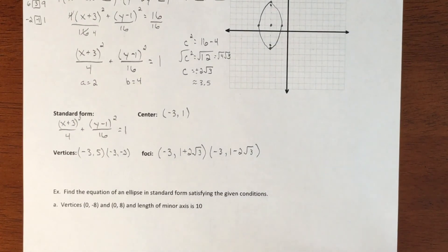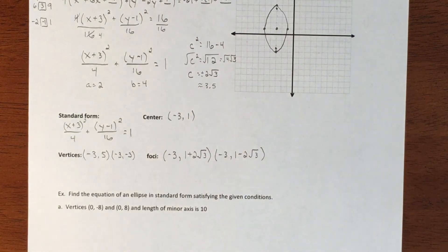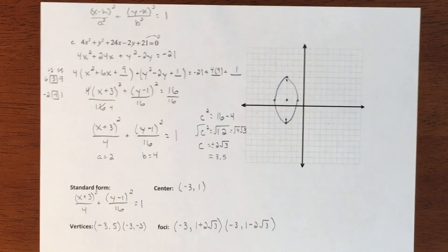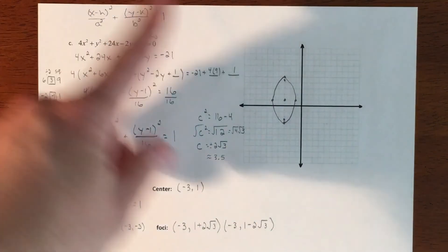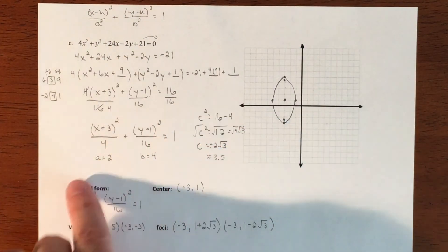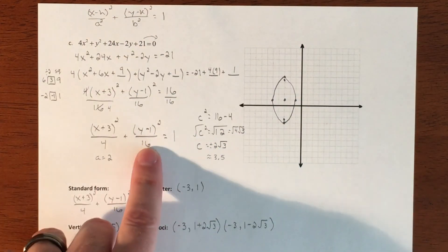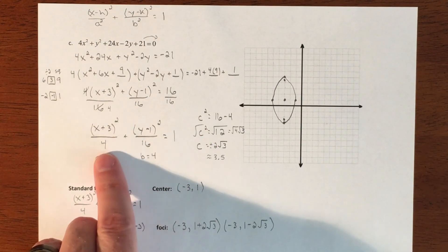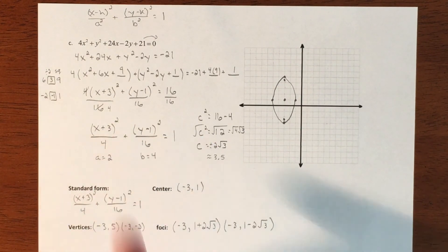And that was graphing an ellipse that is not in graphing form — you have to complete the square and turn it into the right form so you can pull everything out. This was a vertical ellipse because there was more up and down than left and right.